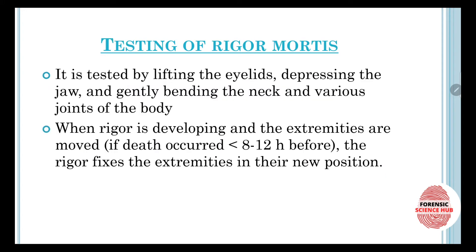To test whether rigor mortis has developed, it is tested by lifting the eyelids of the person, depressing the jaw, gently bending the neck, and bending the various joints of the body. By doing all these things we can test whether or not rigor mortis has appeared in the dead body.